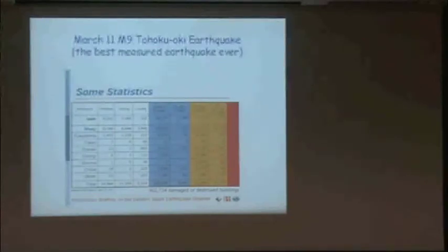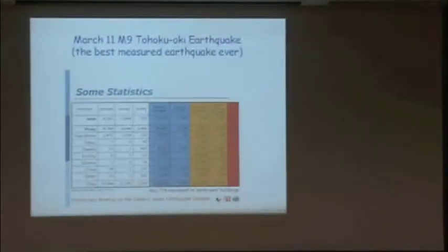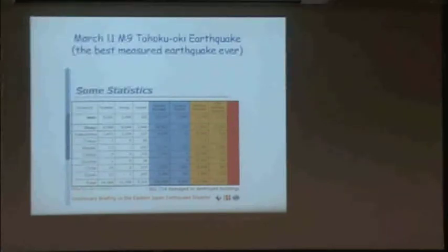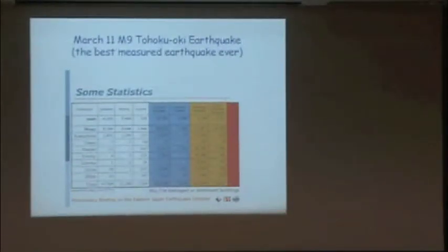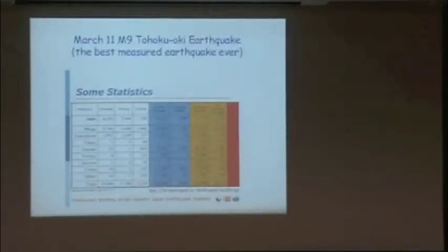The damage at Fukushima power plant was not from the shaking. The power plant shut down appropriately when the shaking came — that's what is programmed to happen in our power plants too. The damage was done by the tsunami, which cut out the power at Fukushima. From the point of view of shaking damage, even in Sendai, the nearest big city, there was very little damage due to the shaking. Almost all of the damage was from the tsunami.